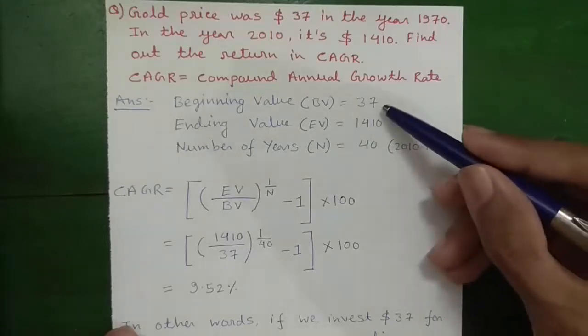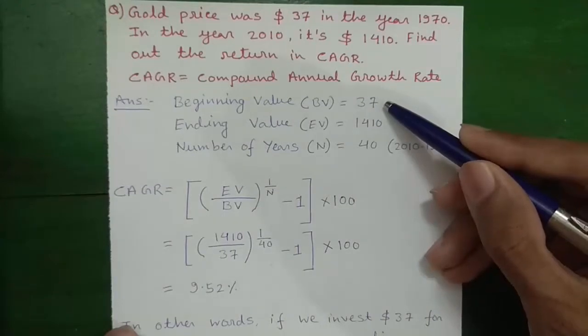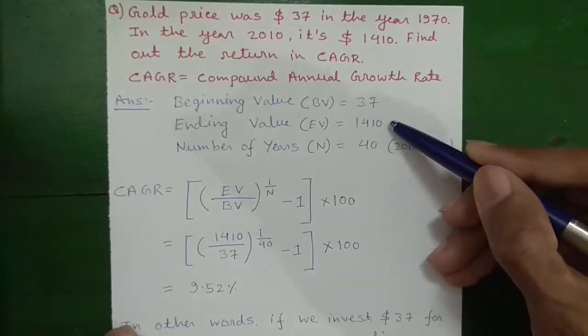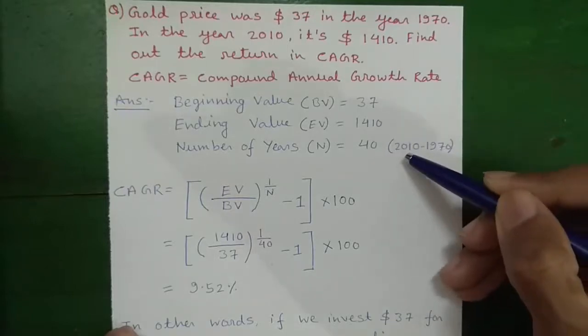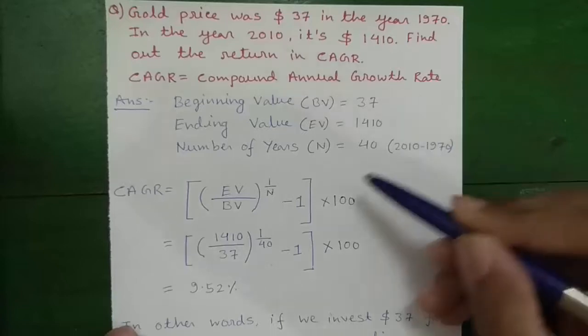So our beginning value or BV was 37, ending value or EV is 1410, number of years or N is 40 that is 2010 minus 1970.